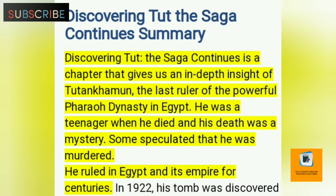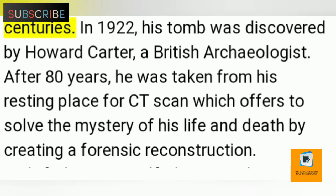The chapter covers Tutankhamun, the last ruler of the powerful pharaoh's dynasty in Egypt. He was a teenager when he died, and his death was a mystery. He ruled in Egypt and its empire for centuries. In 1922, his tomb was discovered by Howard Carter, a British archaeologist.